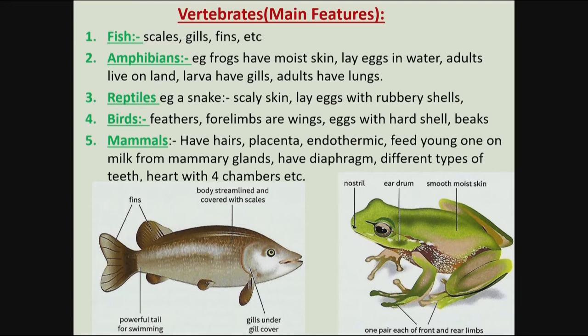The next group are the birds, also referred to as aves. Birds have feathers, their forelimbs have been modified into wings, they normally lay eggs with hard shells, and birds also have beaks.